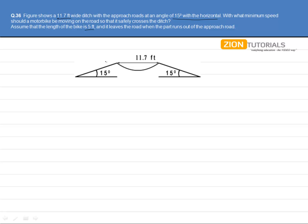Now, if we assume this much length to be of the bike and it will be here on the other side when it reaches like this, we can easily see from this figure that the range becomes 11.7 plus 5.